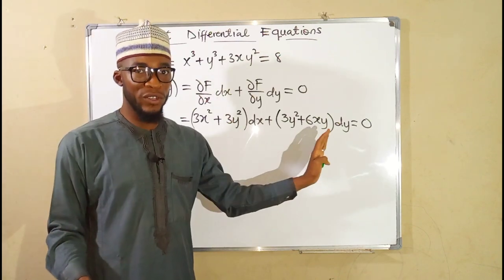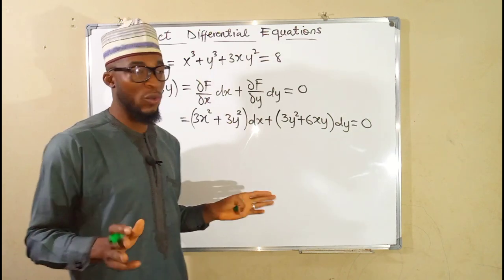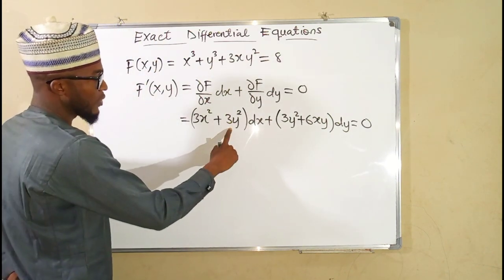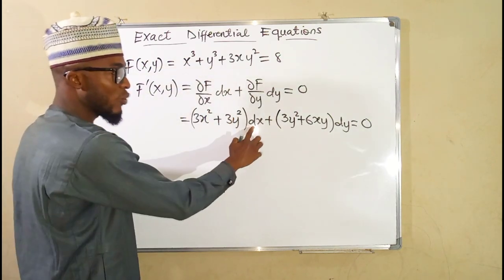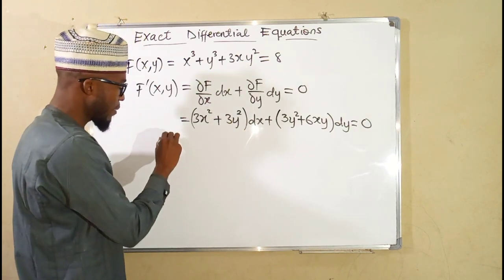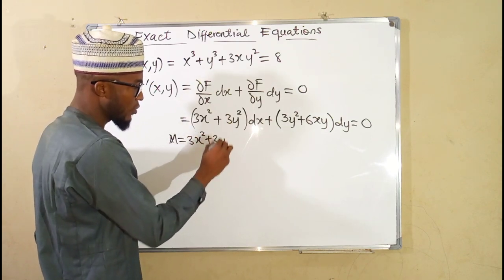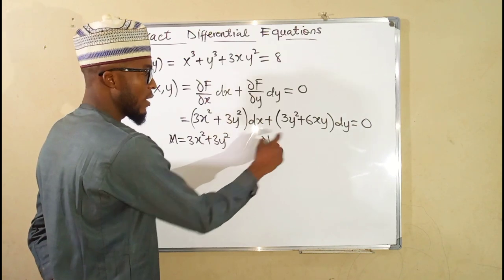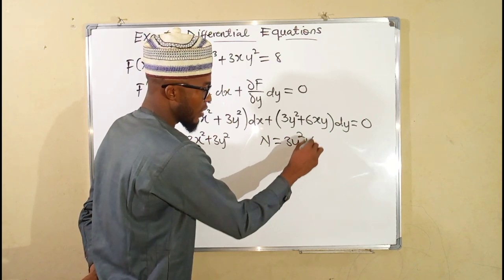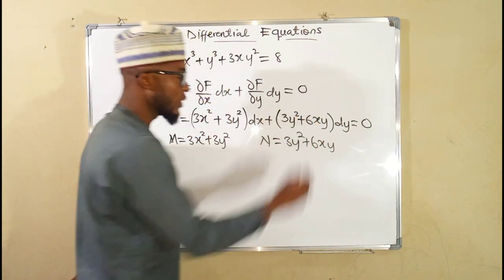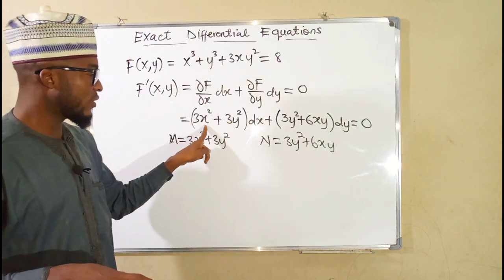This is in the form of an exact differential equation, but we must test whether it truly is exact. Recall that M is the term connected with dx, so M equals 3x squared plus 3y squared, while N is the term connected with dy, so N equals 3y squared plus 6xy.